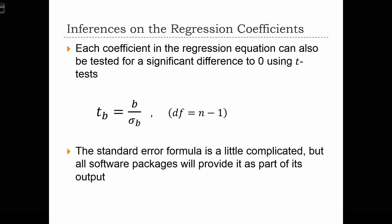We can set up hypothesis tests for each of the regression coefficients in our regression equation. In this case, we can test to see whether the slope coefficient b is significantly different to 0 using a t-test.